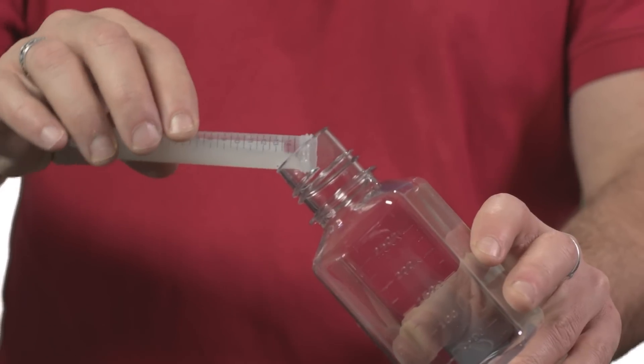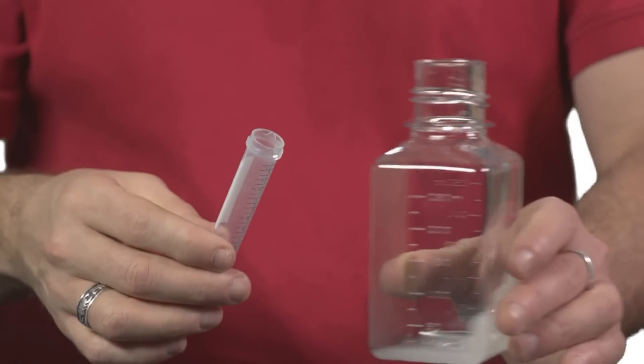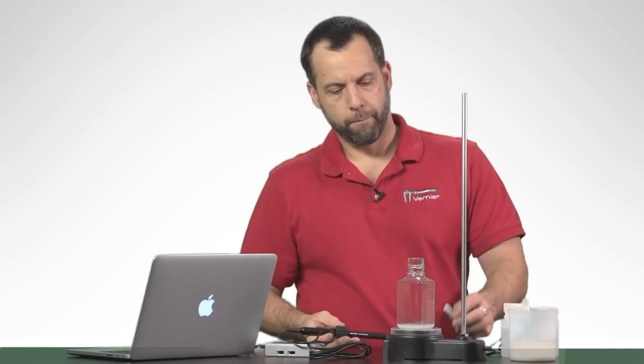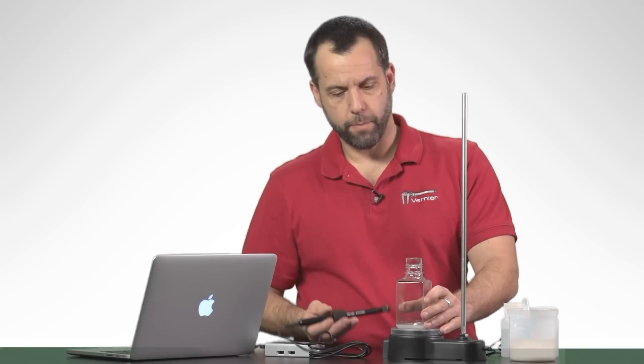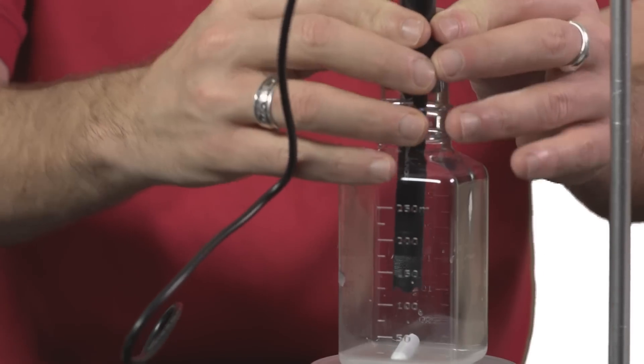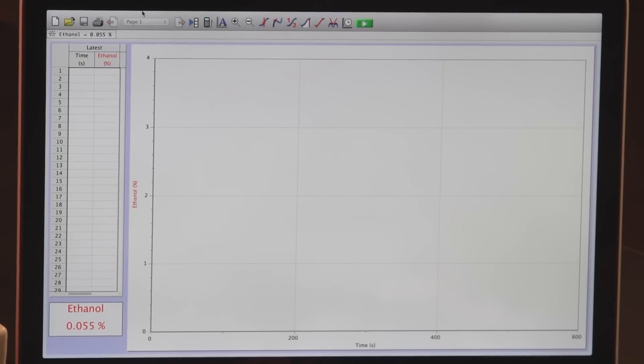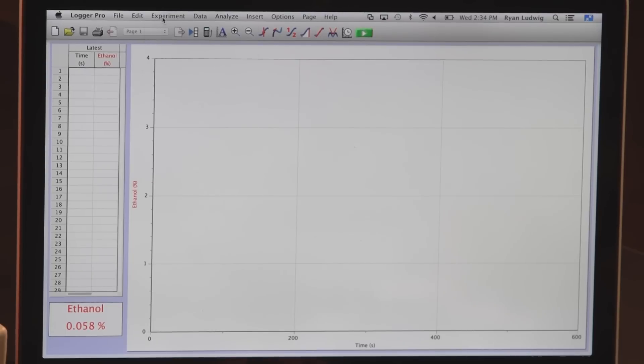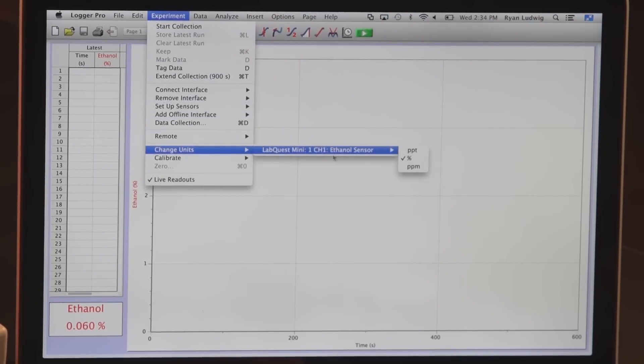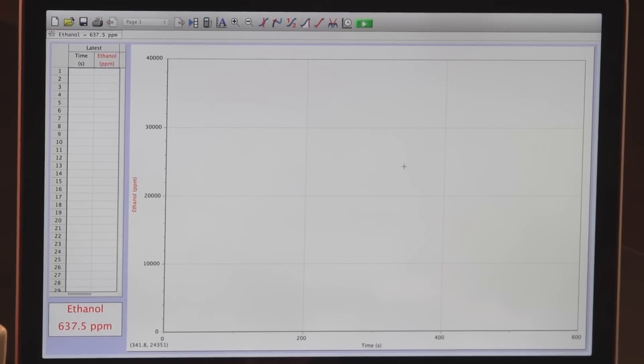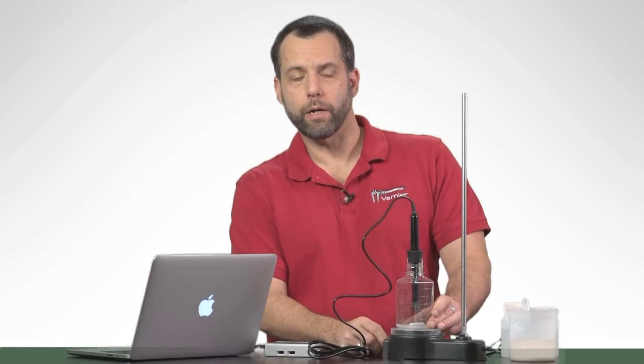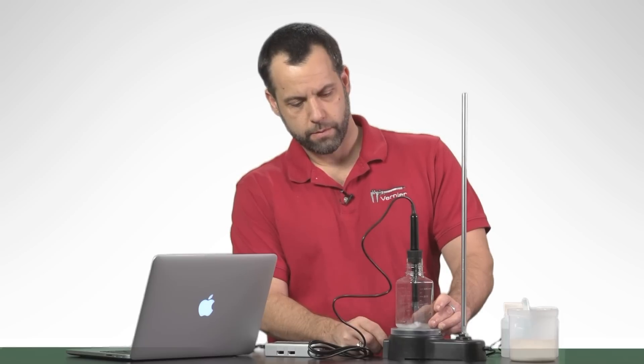Then I pour the yeast suspension with the glucose into the bottle. Then I put the stir bar into the chamber, put the ethanol sensor into the chamber. Real quickly before I start this experiment, I'm just going to change the units over here of the ethanol sensor in LoggerPro by going to the experiment menu and going to change units, ethanol sensor. I just like to see this in parts per million. You can leave it in percent but I like having it in ppm. And then now I'm going to turn it on. It's going to make some noise and then I'm going to hit the collect button.